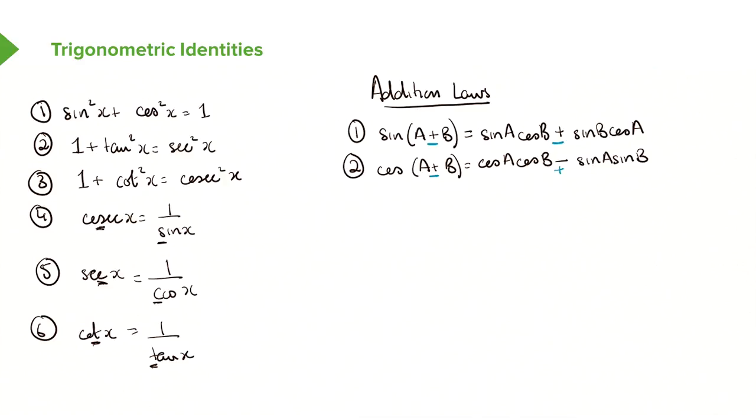Lastly, we'll look at the addition rule for tan. So we have tan(A+B). This is the same as (tanA + tanB) over (1 - tanA tanB).